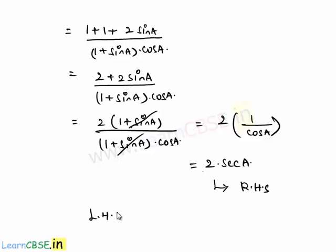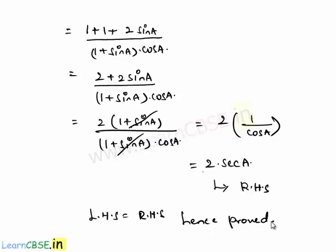We got 2 sec a as the answer, which is our right hand side. LHS equals RHS, and hence we proved the given relation between the trigonometric ratios.